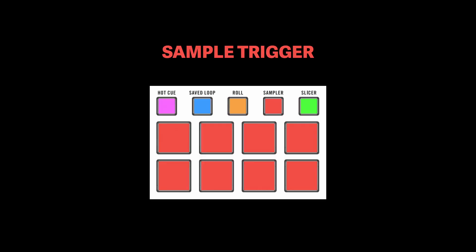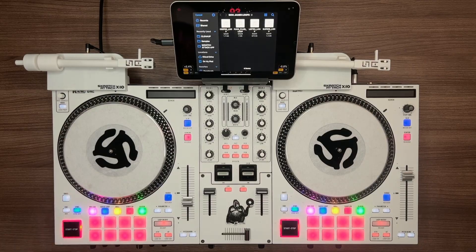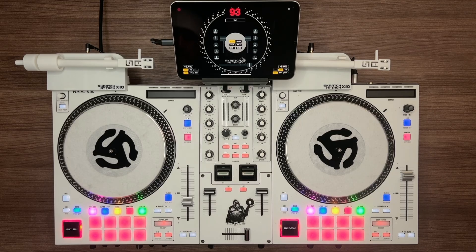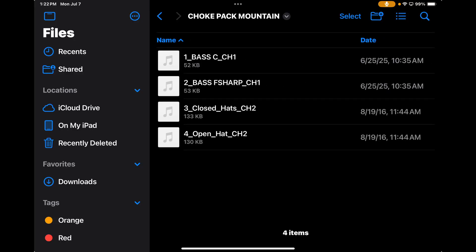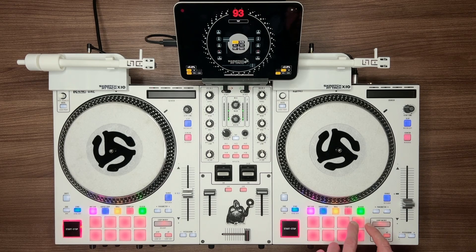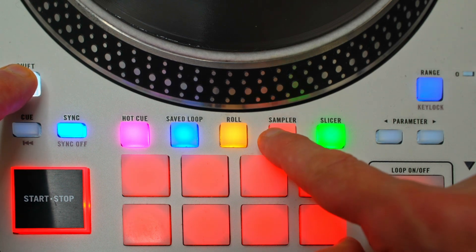Sample Trigger mode is for loading and triggering short samples, one-shots, or drum hits. Press the Sampler button — pads turn red. Hold Shift and tap a pad to load a sample, then tap the pad again to trigger it. We've added choke groups to the sampler — just name your files with underscore CH plus a number 1 through 9. For example, note1_CH1.wav and note2_CH1.wav will be in the same choke group: when you trigger one, it cuts off the other. Perfect for hi-hats, bass notes, or any layered sounds you want to keep clean. Loading folders to all eight pads is also available by pressing Shift plus the red sampler button.